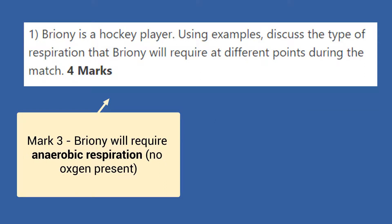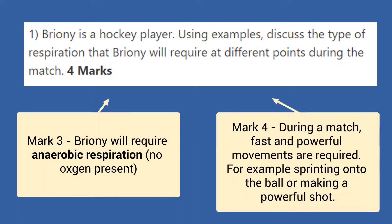For mark three, we simply need to say that Briny will require anaerobic respiration — if you put that no oxygen is present, even better. For mark four, we need to give an example of anaerobic respiration, so we could say that during a match, fast and powerful movements are required — for example, sprinting onto the ball or producing a powerful shot.